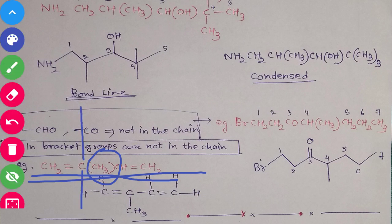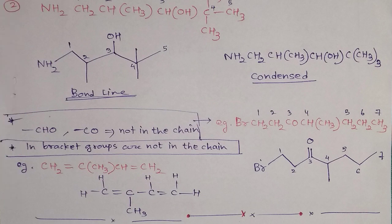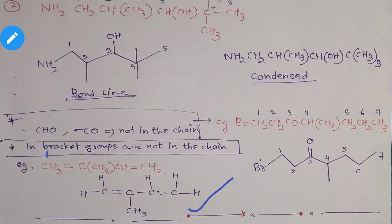So here I have written the representation. First of all, you have to mark the carbons. You mark like this: carbon number 1, carbon number 2, carbon number 3, carbon number 4. You see why I am not marking this one carbon? Because this carbon is not present in the chain. It is written in the bracket, which means it is a substituent of carbon number 2.